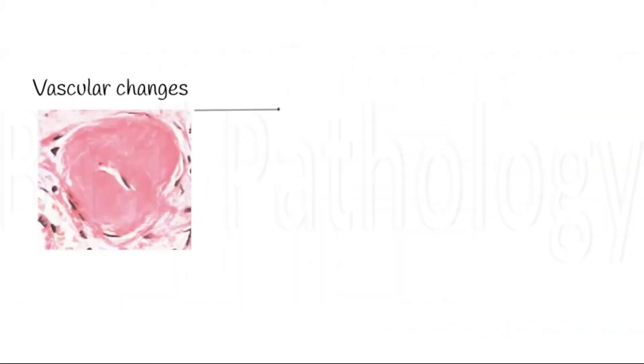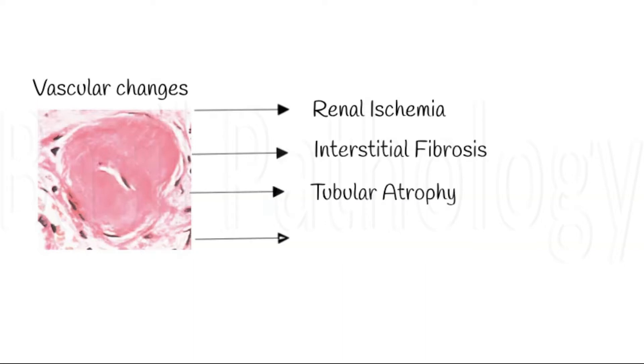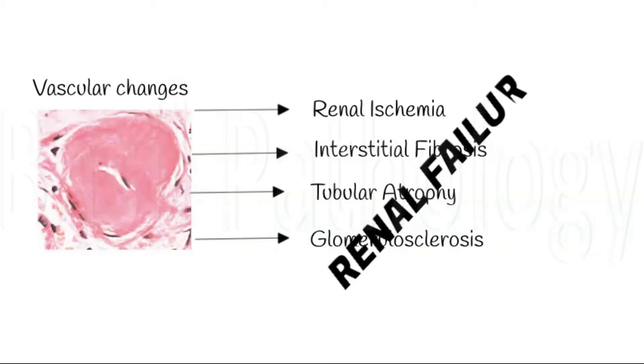These vascular changes result in renal ischemia, interstitial fibrosis, tubular atrophy, and glomerulosclerosis, finally resulting in renal failure.